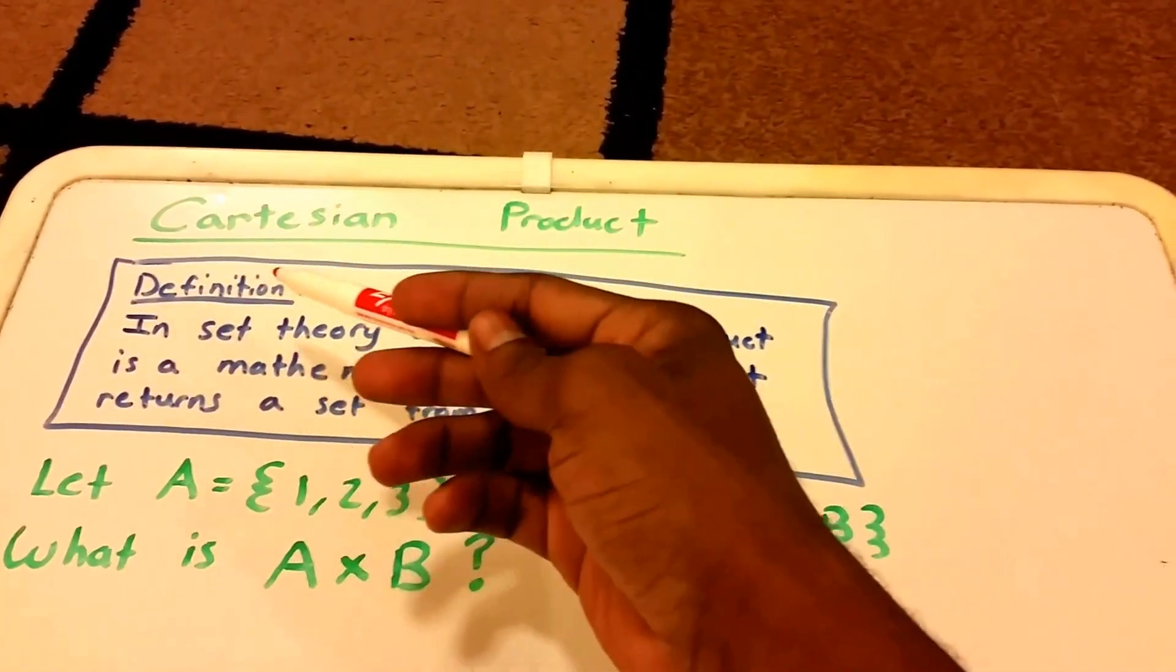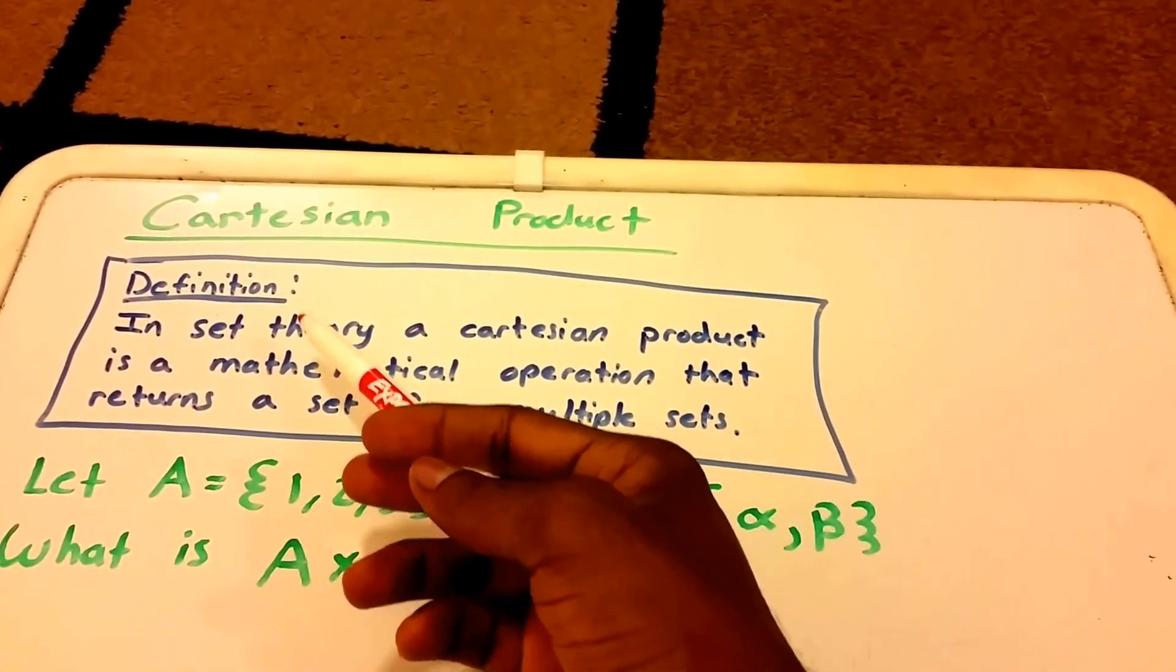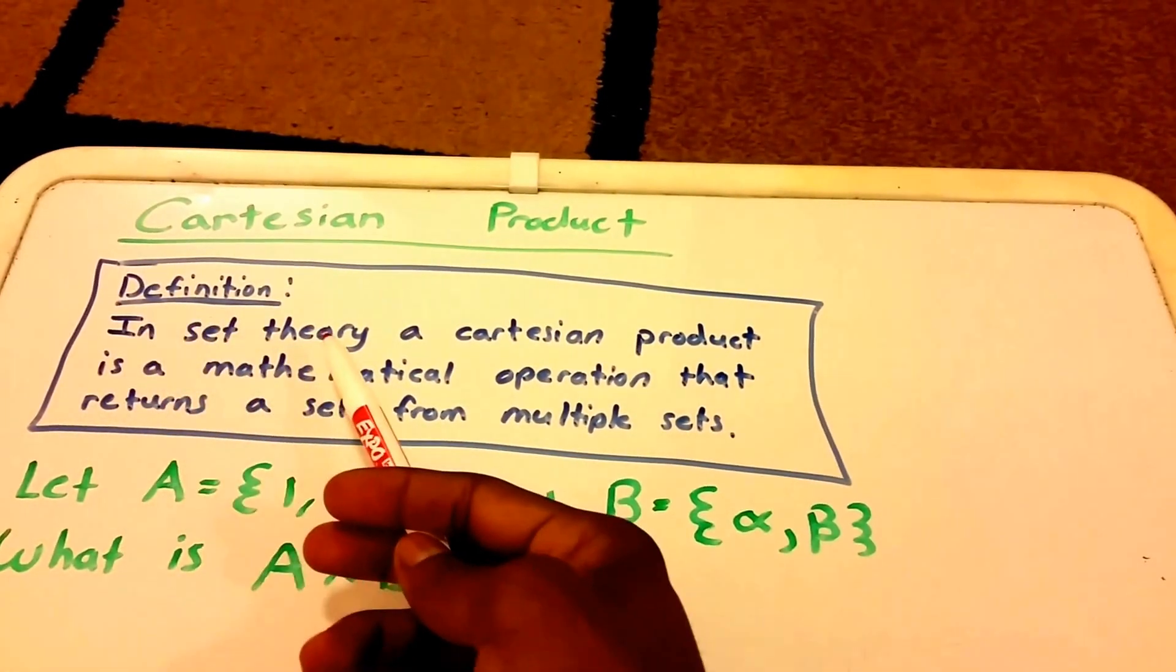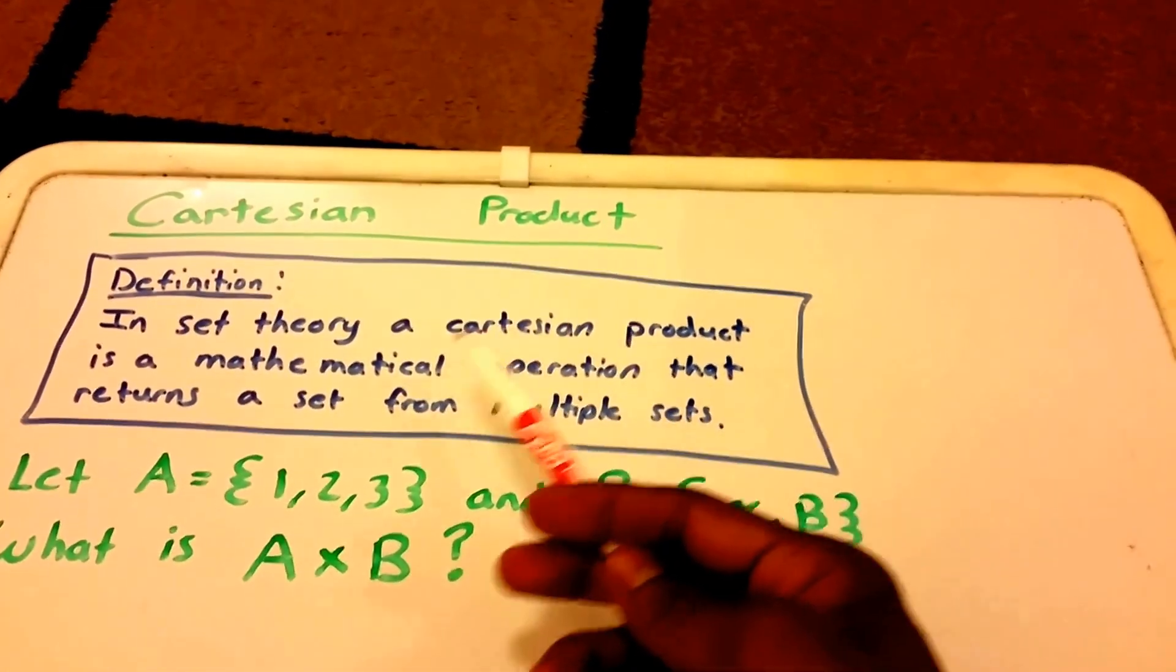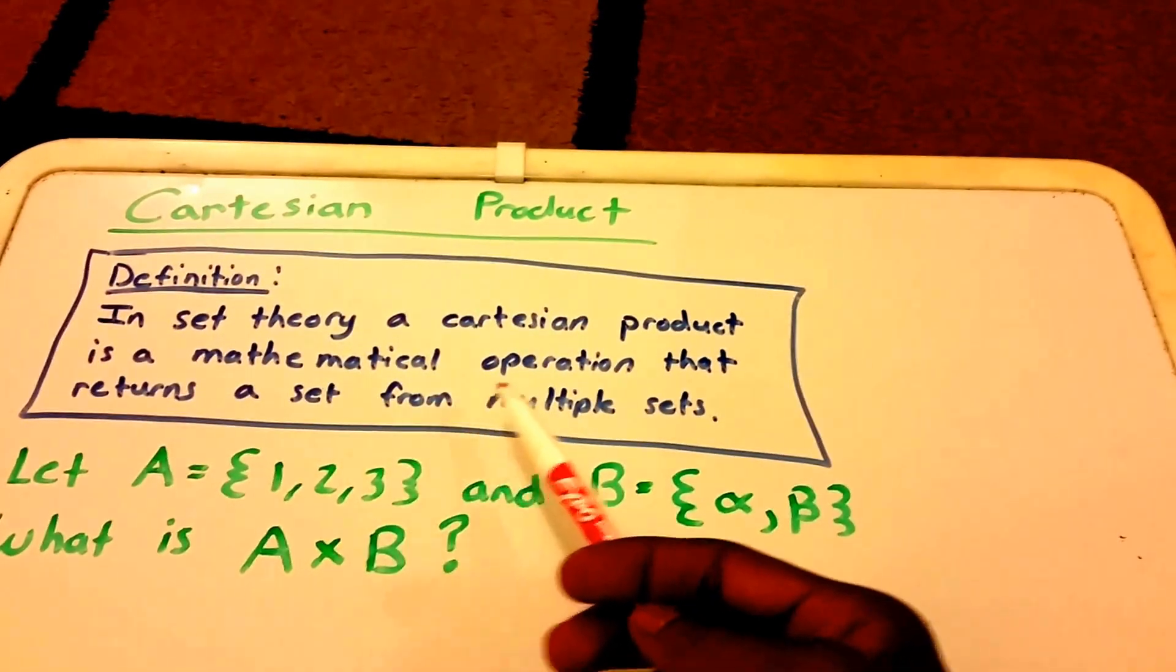The Cartesian product is also known as the cross product or the product set. So here in blue, I have the definition of a Cartesian product, and it says that in set theory, a Cartesian product is a mathematical operation that returns a set from multiple sets.